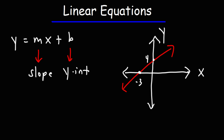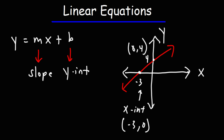The x-intercept is the x-value where the line touches the x-axis. In this case, the x-intercept as an ordered pair is negative 3 comma 0, and the y-intercept is 0, 4. So at the x-intercept, y is 0, and at the y-intercept, x is 0. That's how you can find it graphically.